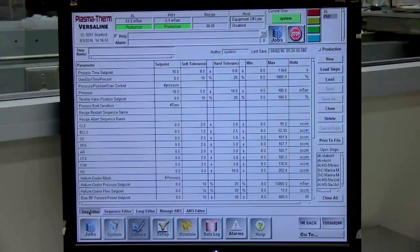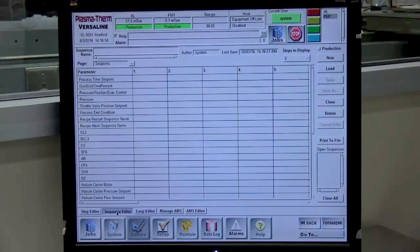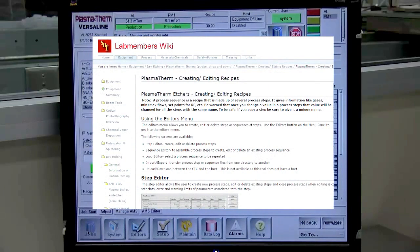If a recipe step is modified and saved, the changes are effective in all the sequences the recipe step is used, even if the sequence is not edited. Instructions for creating and editing recipes can be found on the SNF Plasmatherm webpages.